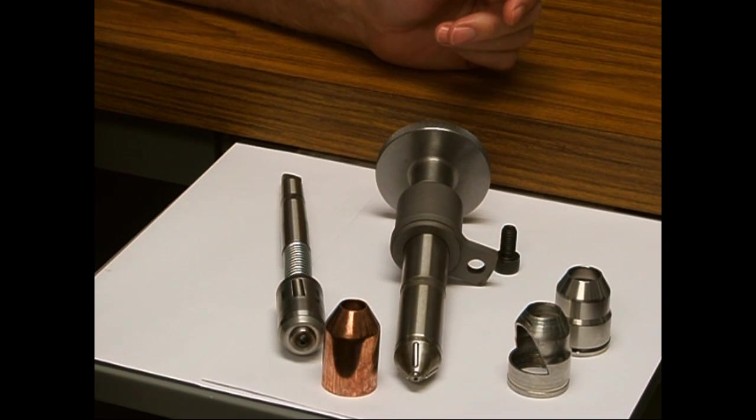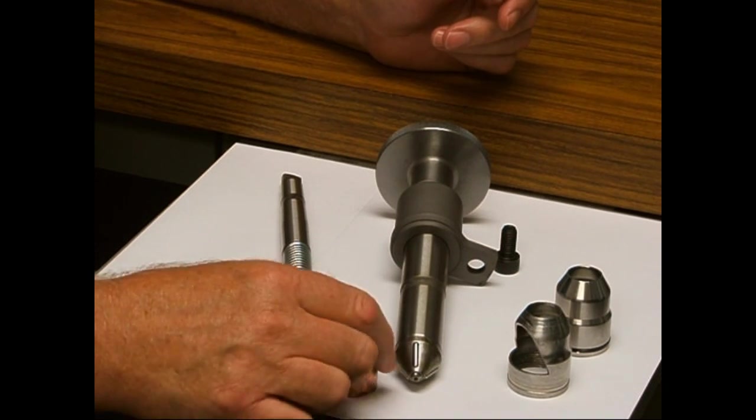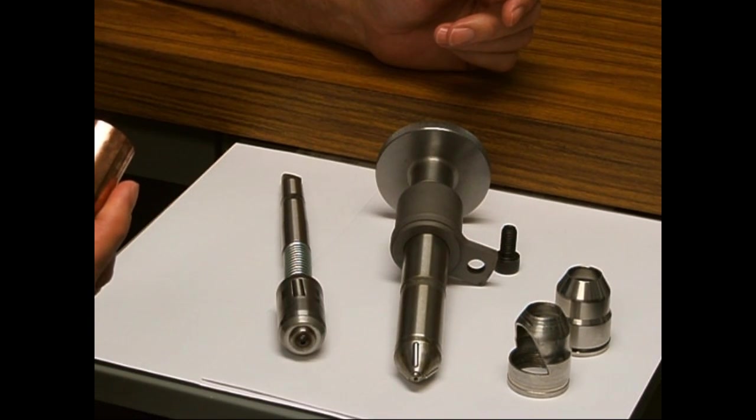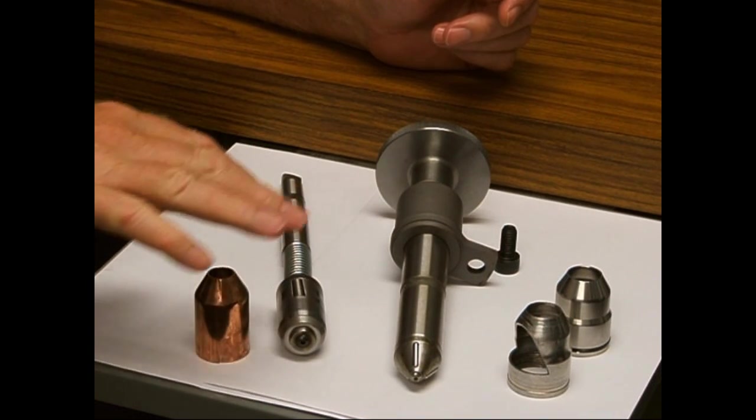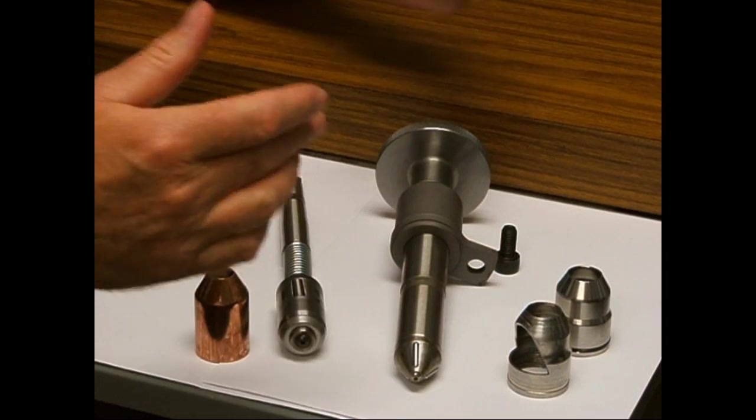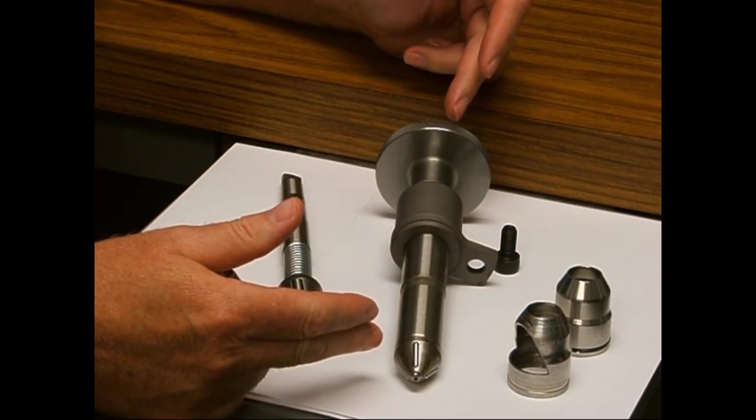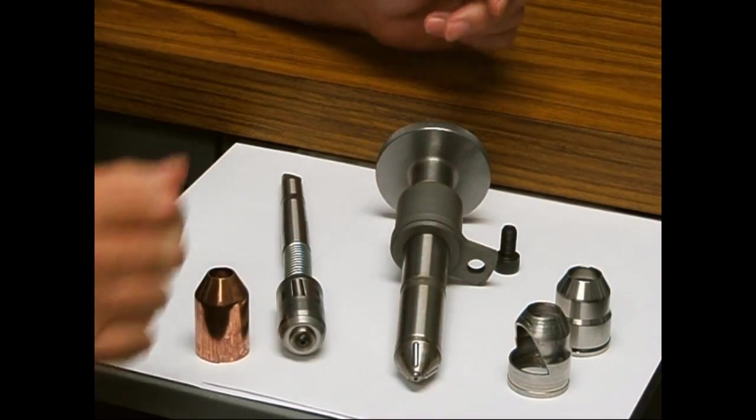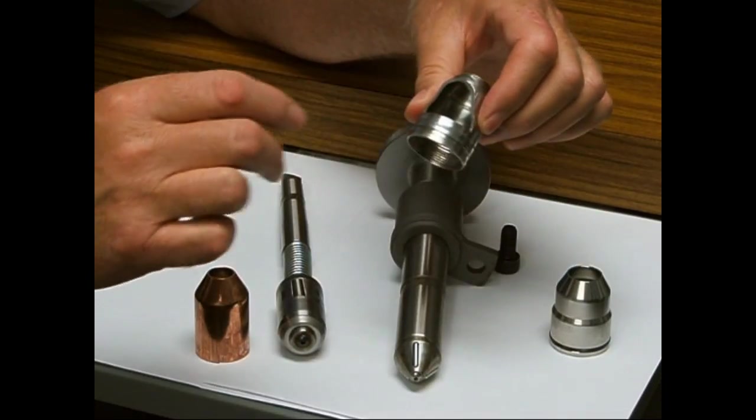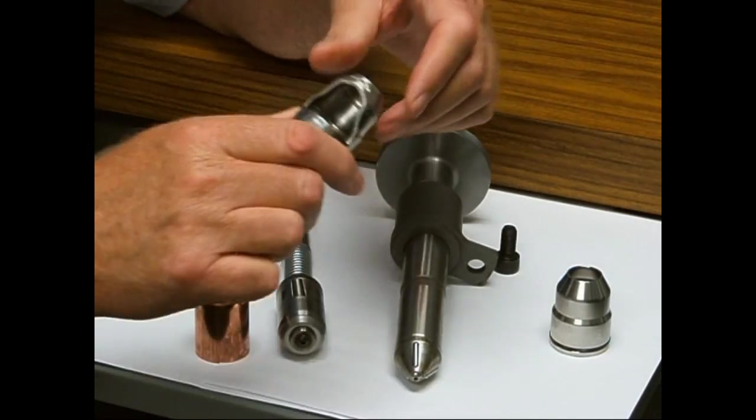That'll be the Cummins 250 series, the 855s, 903s for the copper applications, also M11 and L10 copper injector sleeves, how to roll those sleeves out. In addition, we'll be talking about our nose rolling tool for the ISX, which is a stainless steel injector sleeve being used.